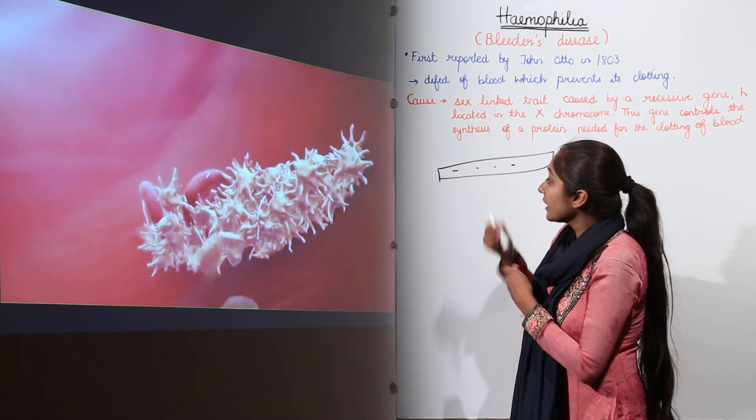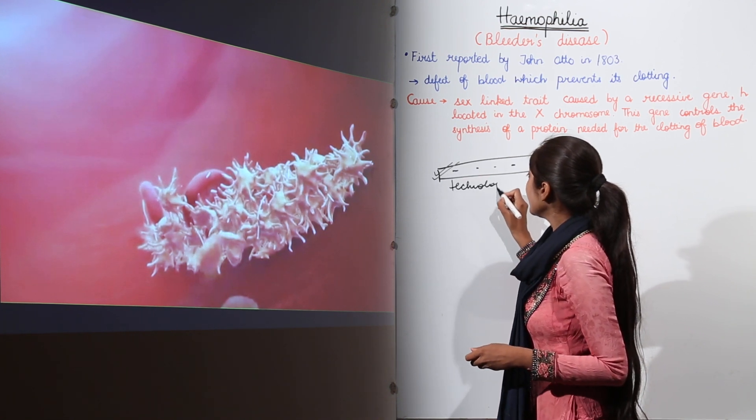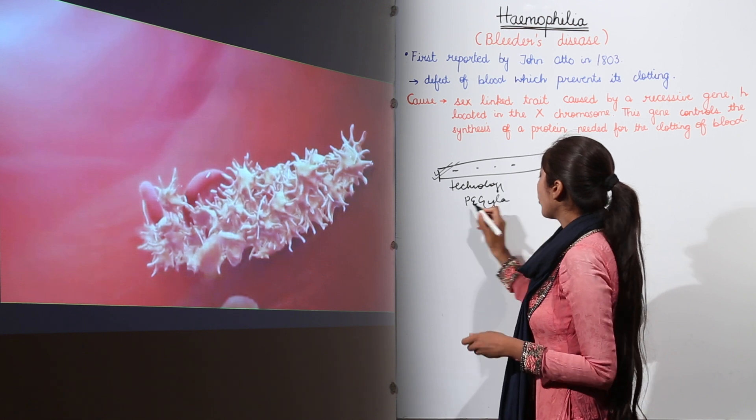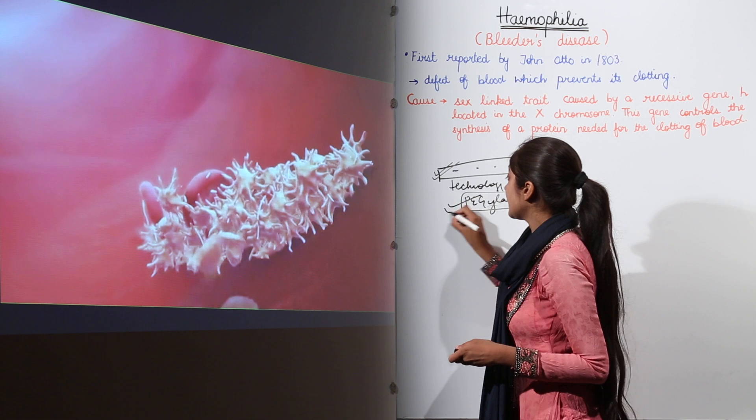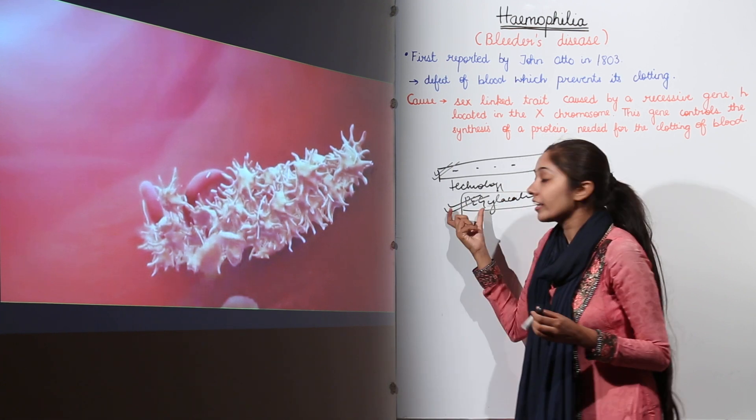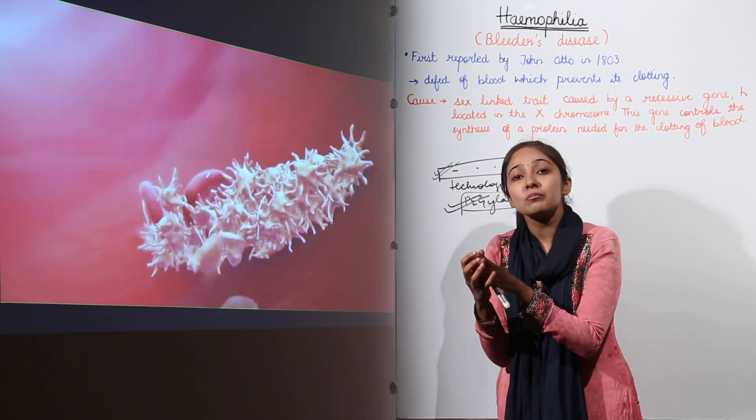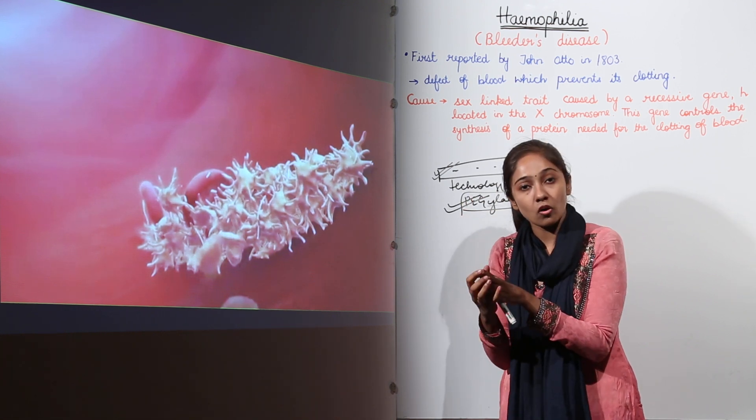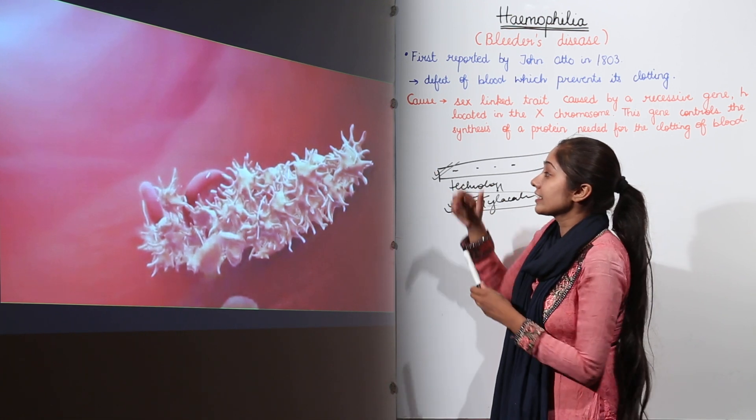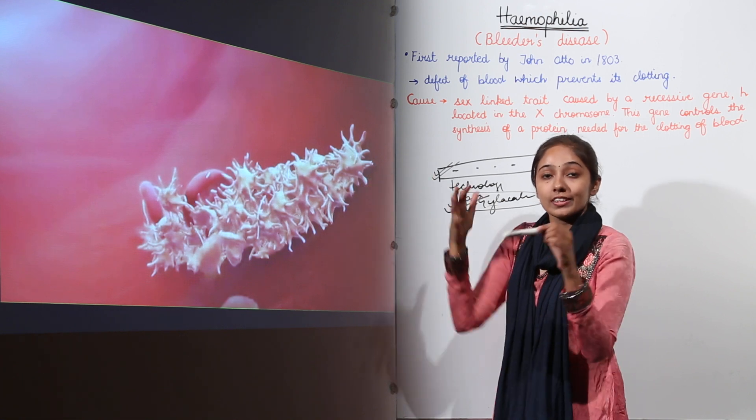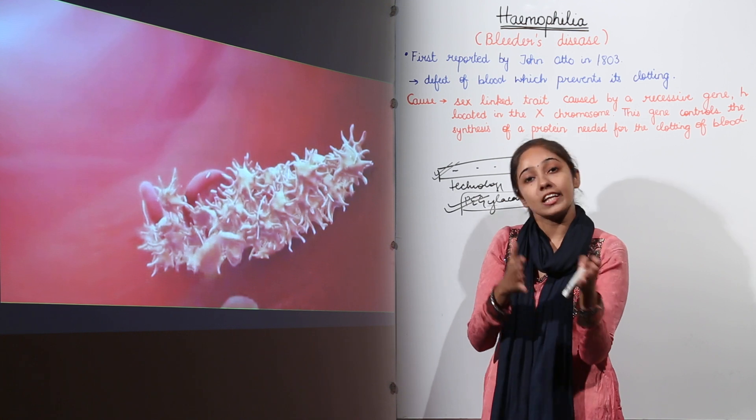We can actually have better technology which is PEG, polyethylene glycation. So this technology is actually the front runner technology, the latest technology by which the proteins are attached to this polymer that is polyethylene glycol which actually increases the stay of these clotting factors. For example, clotting factor 8 and clotting factor 9 in case of hemophilia A and hemophilia B.